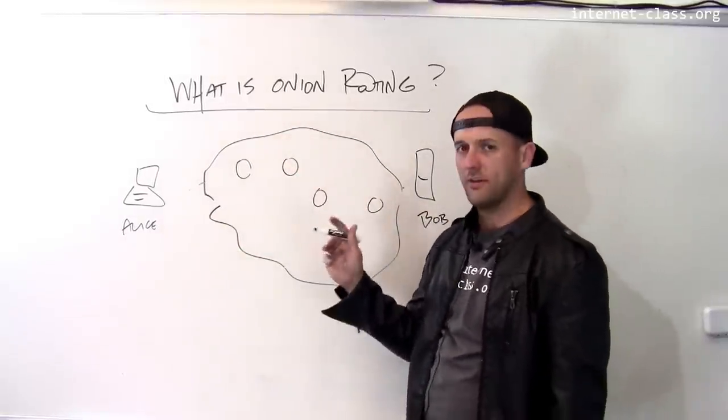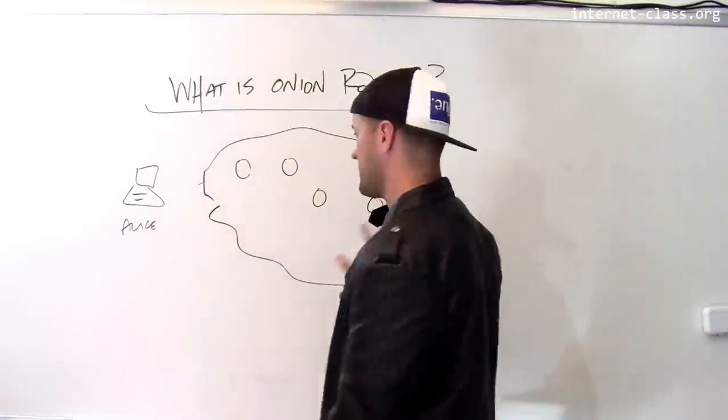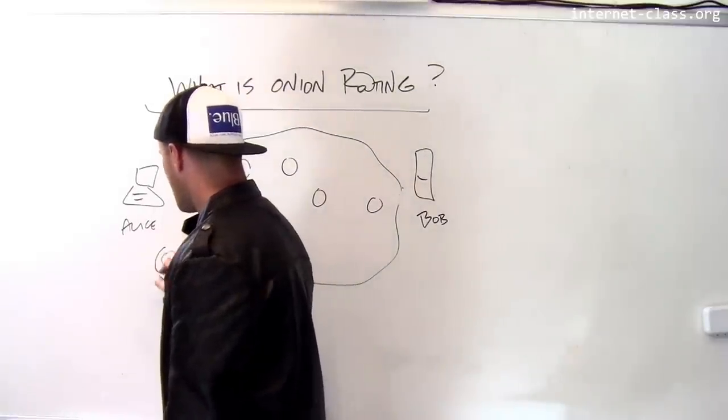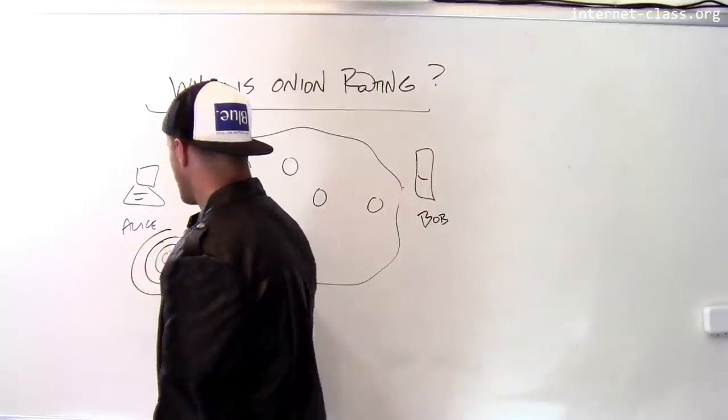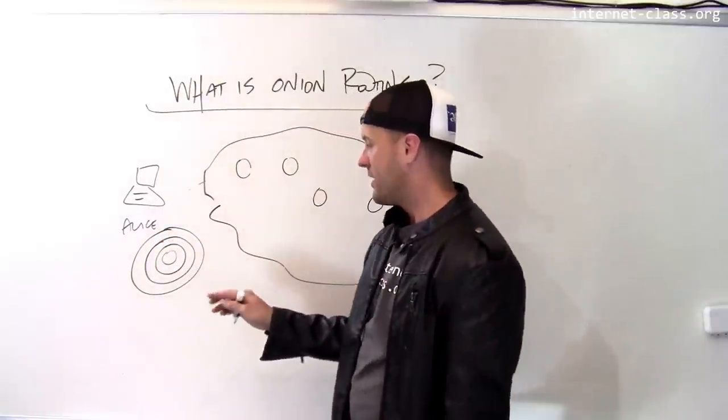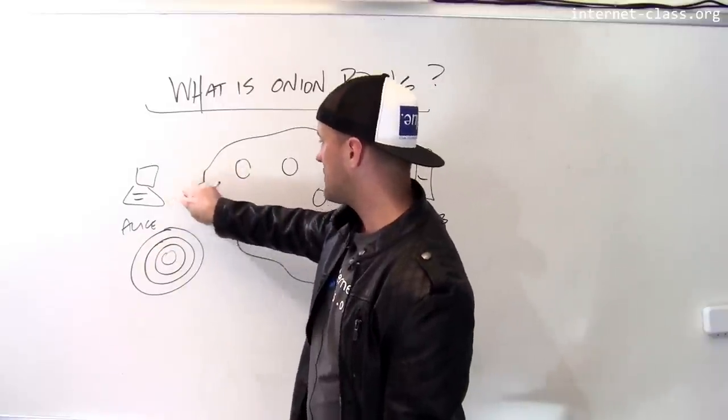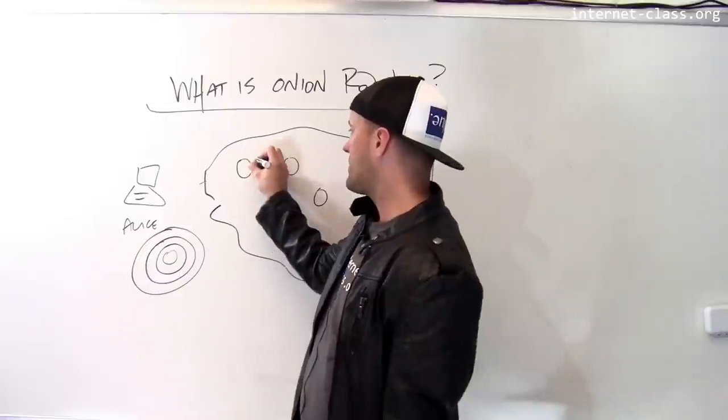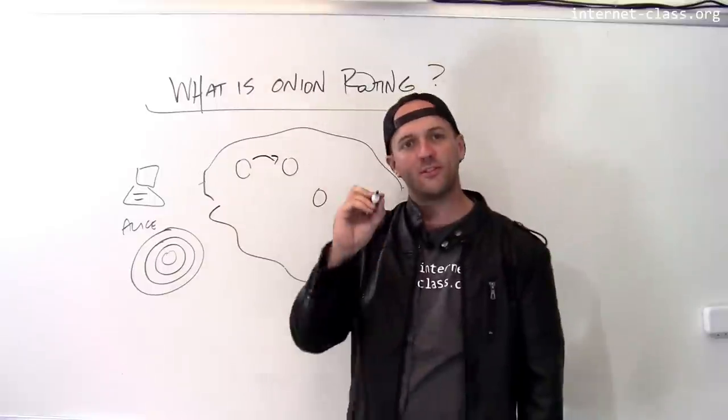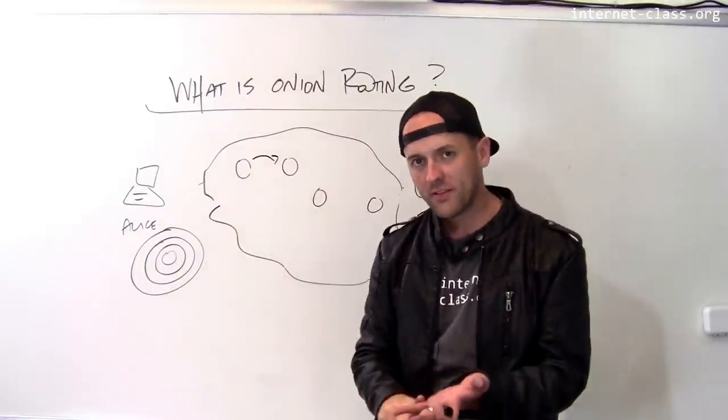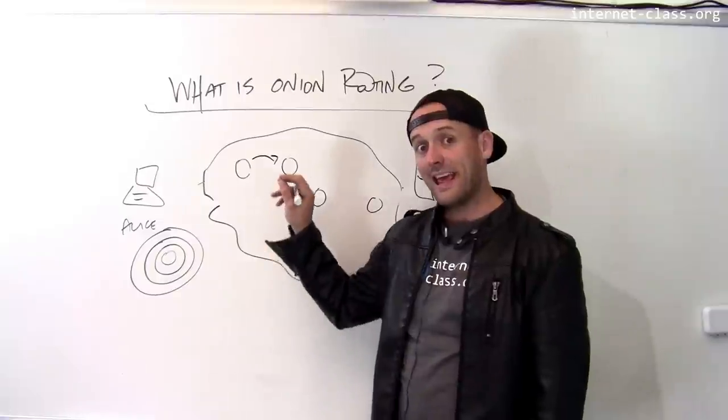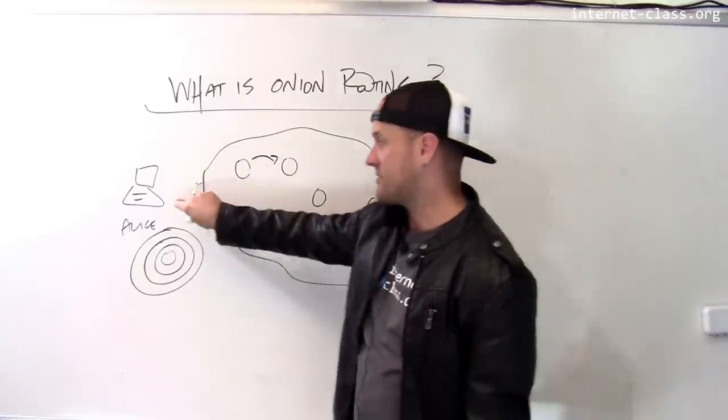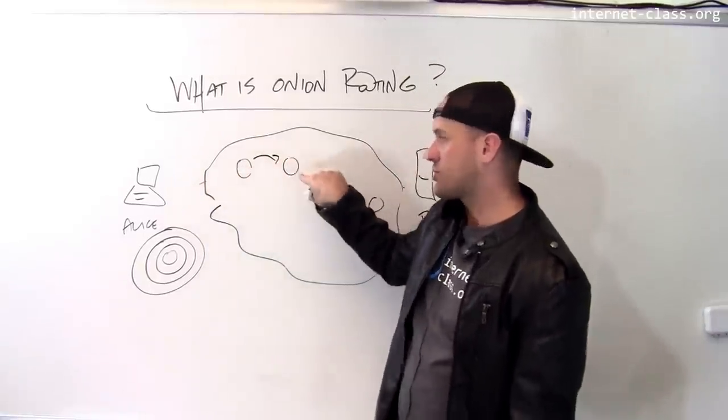This is called onion routing because when Alice sends a message to Bob using this protocol, she wraps the message in a layer of instructions to each router along the path. When she sends the message to the first router, it looks at the outer layer of the onion and that tells it where to send the message next. But it doesn't tell the router where the message is going or that Alice is the originator. All the router knows is that it got a message from her computer and which router to send it to next.